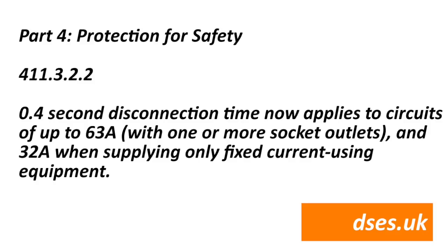Regulation 411.3.2.2 previously stated the maximum disconnection time for TN installations of up to 230V AC was 0.4 seconds for any circuit up to 32 amps, and 5 seconds for higher-rated distribution circuits. That has now changed slightly: 0.4 seconds now applies on circuits up to 63 amps with one or more socket outlets, and still 32 amps when supplying any fixed connected current-using equipment. Five seconds still applies to distribution circuits or circuits not covered by this regulation.